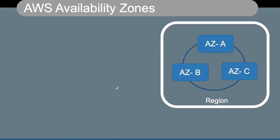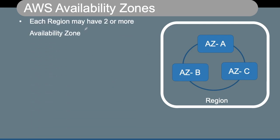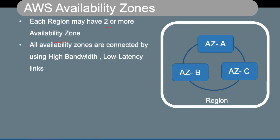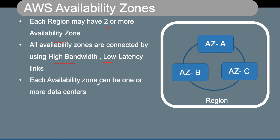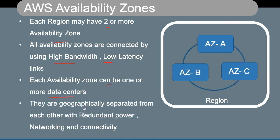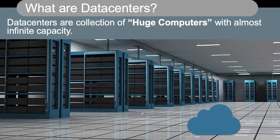Availability zones are different clusters of data centers within an AWS region. Each region may have two or more availability zones, and all these AZs are connected to each other using high-bandwidth, low-latency links. Each availability zone can have one or more data centers, and they are geographically separated with redundant power supplies, redundant networking, and are built in different flood plains and earthquake zones.